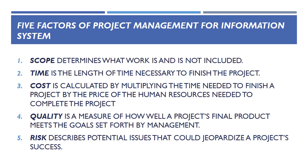Five factors of project management for information systems. First is scope. It determines what work is and is not included. For instance, the scope of a project for a new order processing system might not involve any changes to the corresponding accounts receivable, manufacturing, distribution, and inventory management systems, but rather new modules for entering orders and sending them to production and accounting.